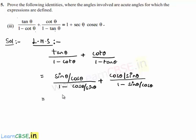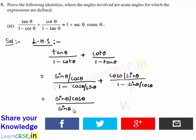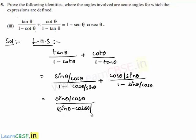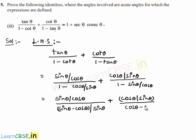So sine theta by cos theta, let it remain as it is, and in the denominator if we take sine theta common then we get sine theta minus cos theta, whole by sine theta. Plus cos theta by sine theta, let it remain the same in the numerator, and in the denominator, if we take cos theta as common, we get cos theta minus sine theta, whole by cos theta. In these two terms, if we observe clearly we can take 1 by sine theta minus cos theta as common.